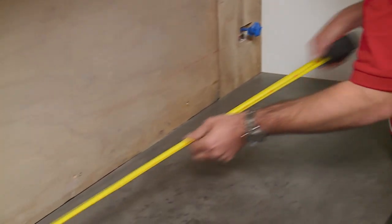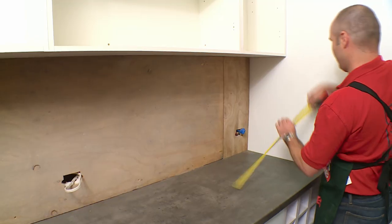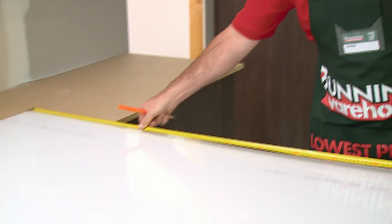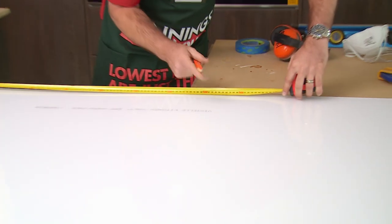The first thing we do is measure up the space. I'm measuring the length and the height of the splashback before I make the cuts. Now I've got the measurements, I'll go and transfer them to the acrylic splashback.